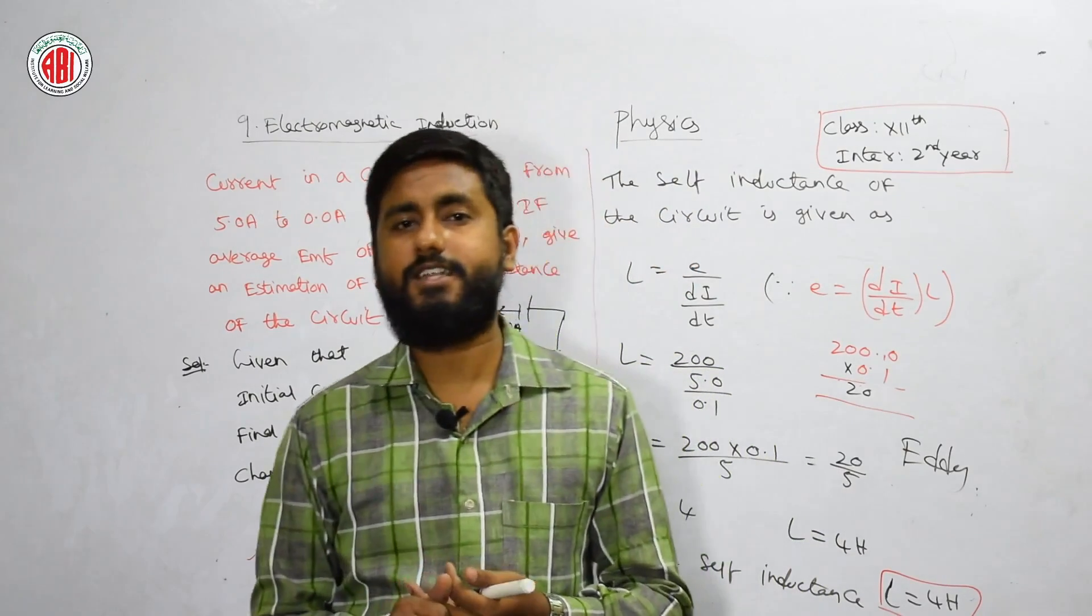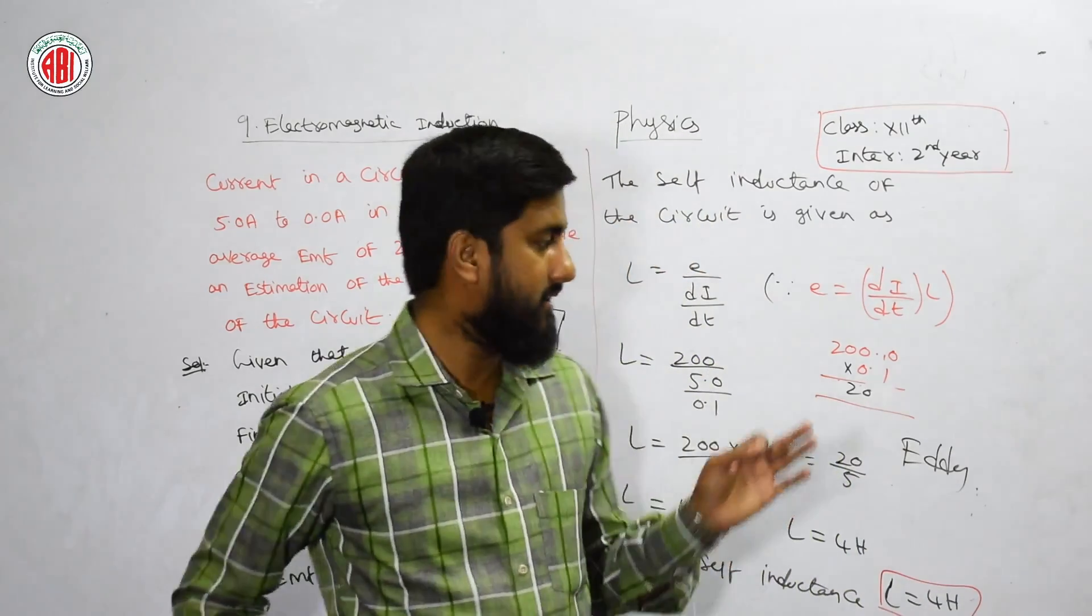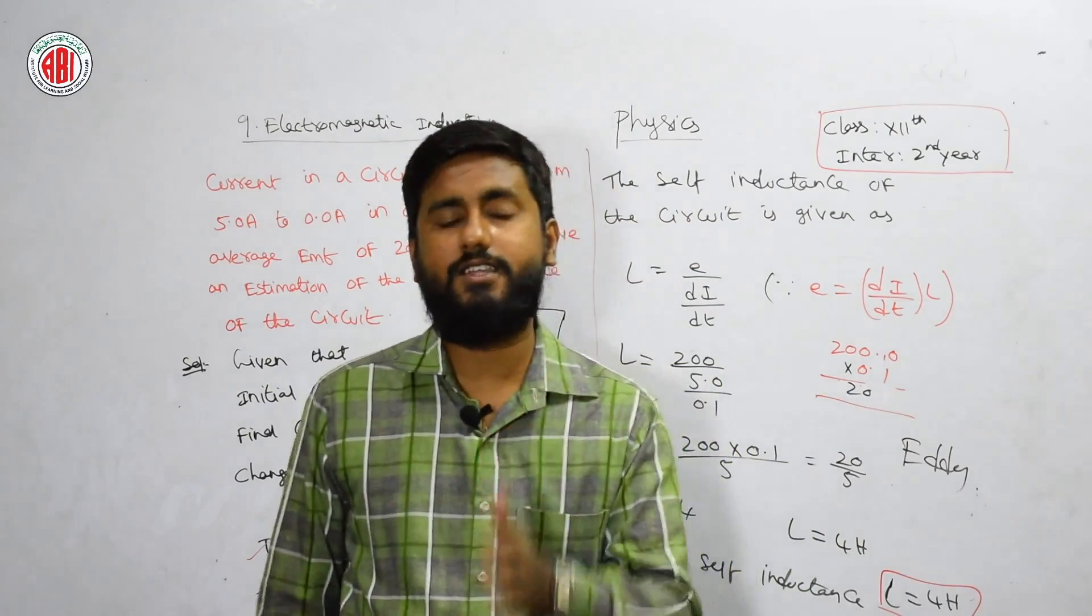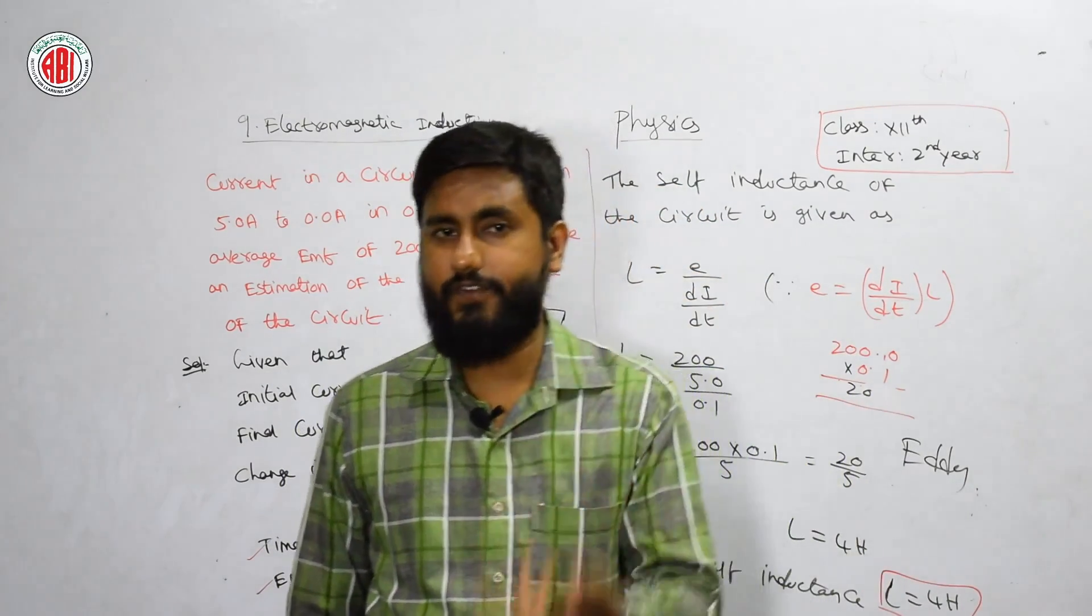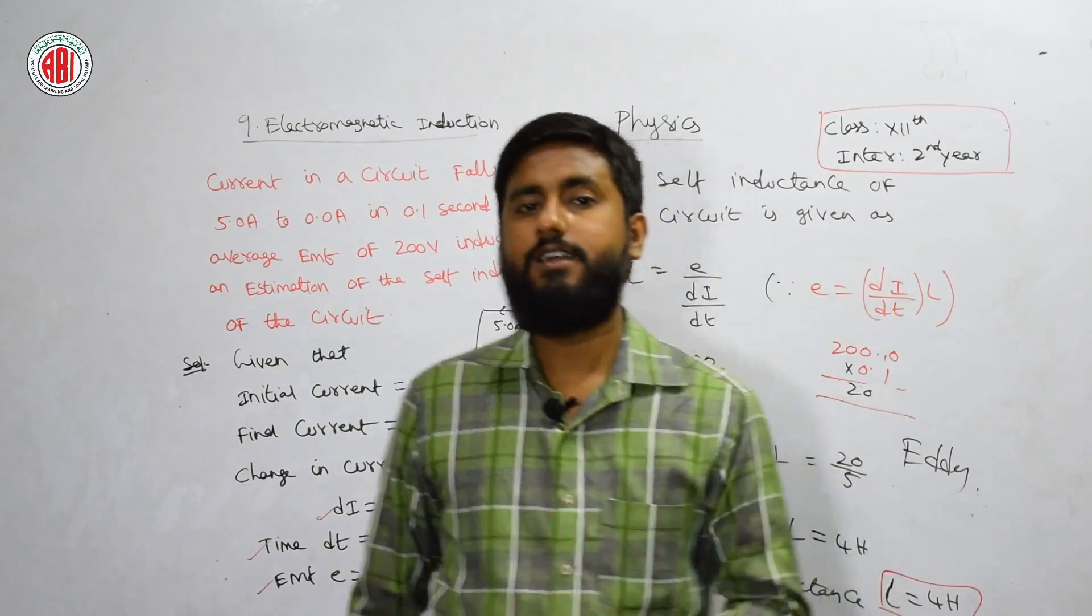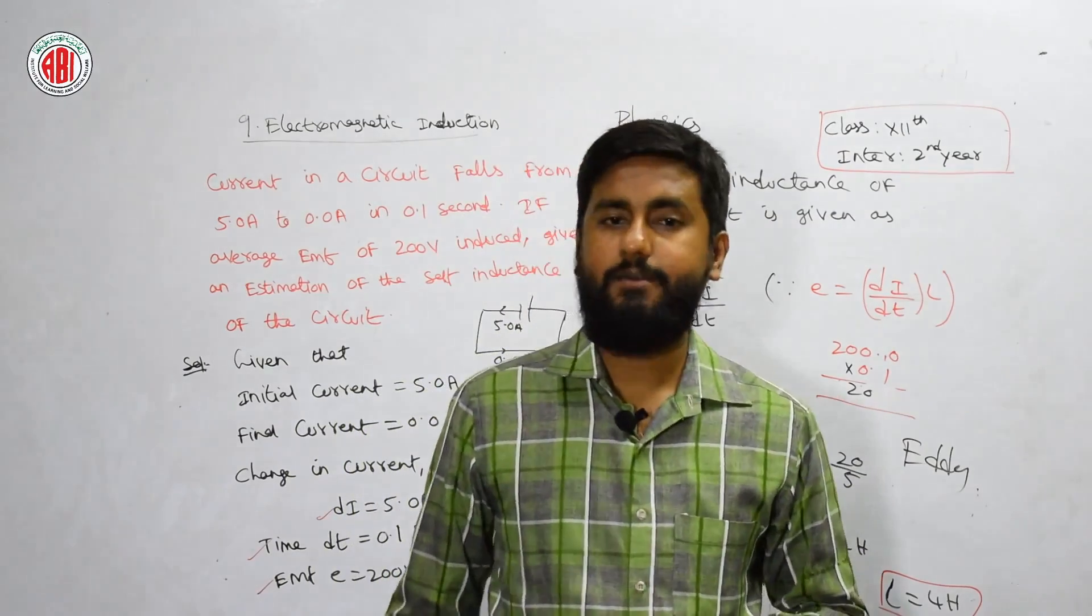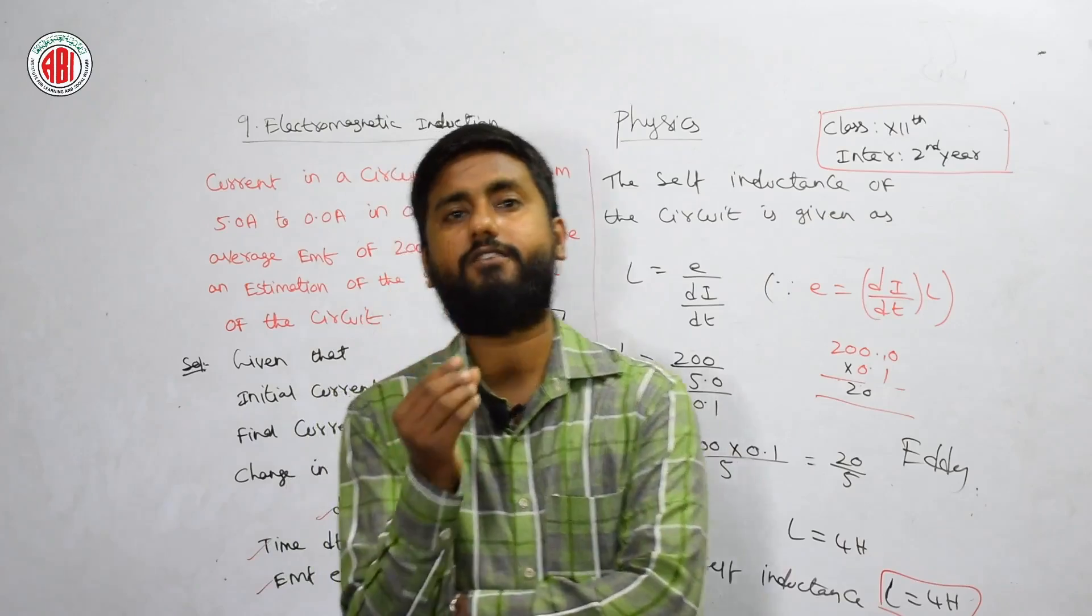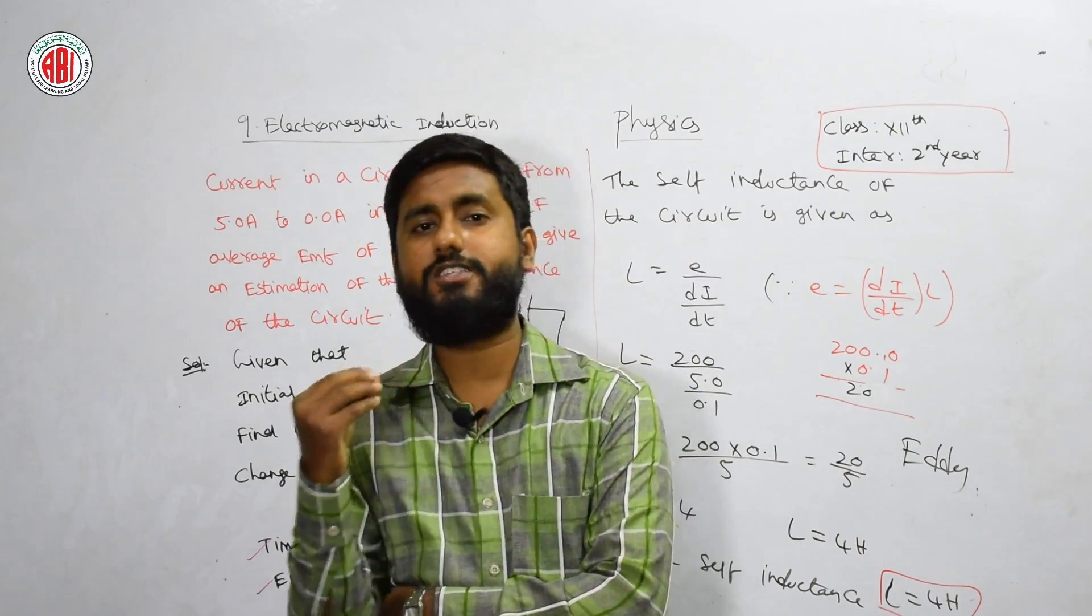These four points related to Eddy's current are very important. You need to write this. The Eddy's current could be used in different ways. First, magnetic braking in train. Second, electromagnetic damping. Third, induction furnaces. Fourth, electric power meter. After writing these four points, you need to maintain one more side headings related to these four points. Each point you need to describe for a few lines.